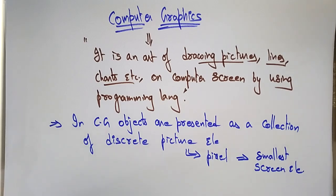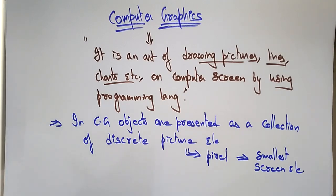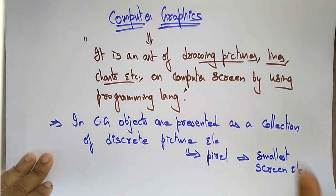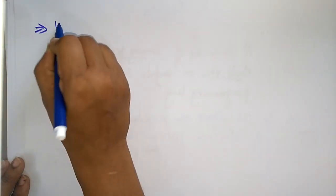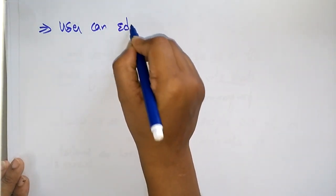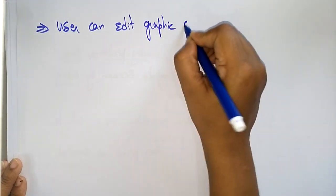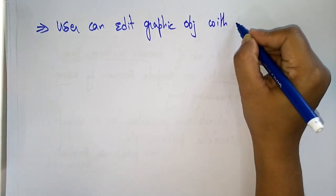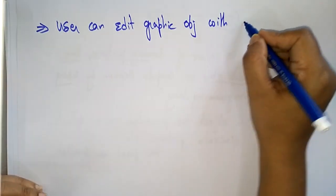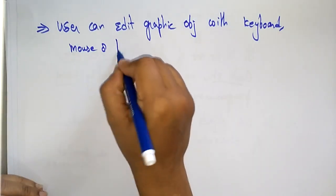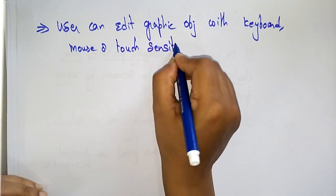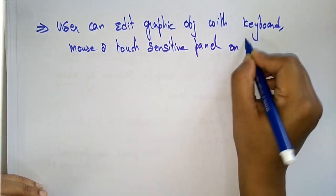The creation, computation, and manipulation of graphics is controlled by these pixels. The user can edit the graphic objects using keyboard, mouse, or touch sensitive panels on the screen.